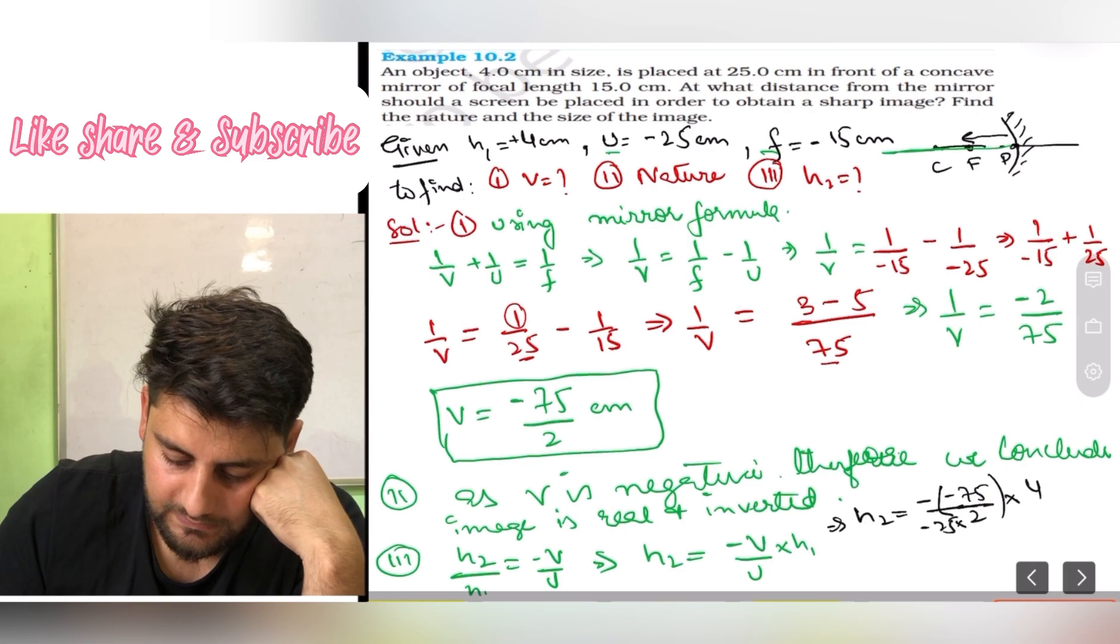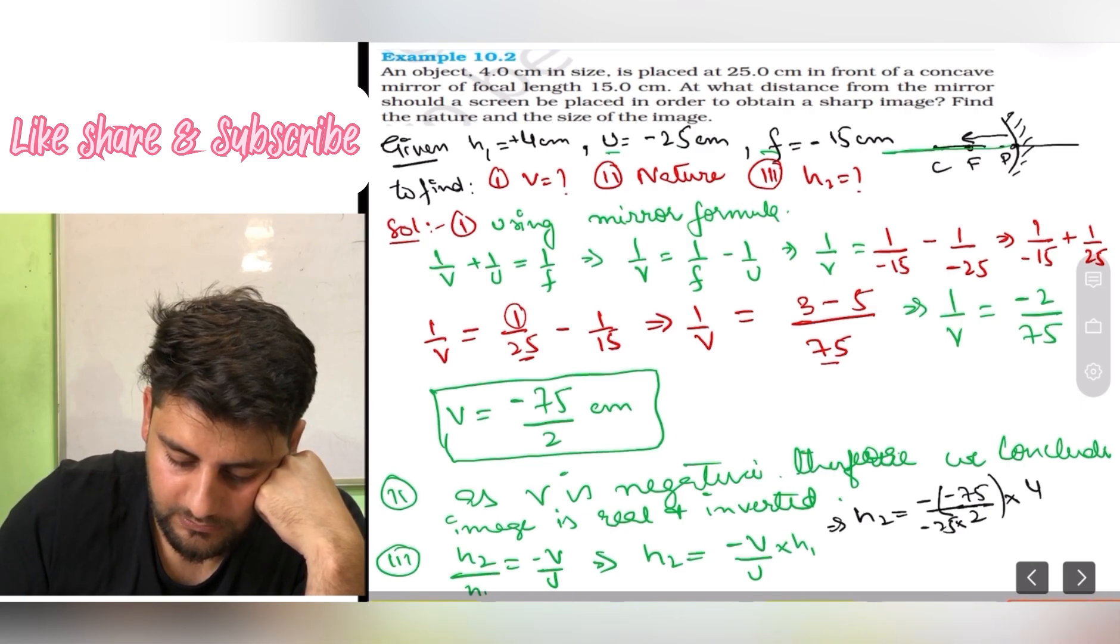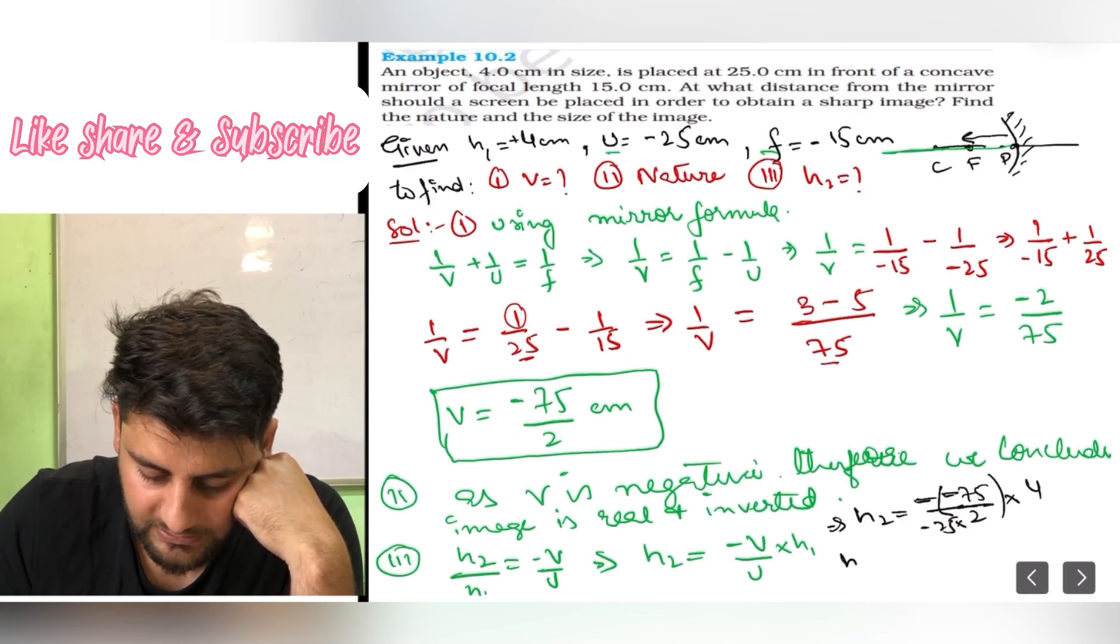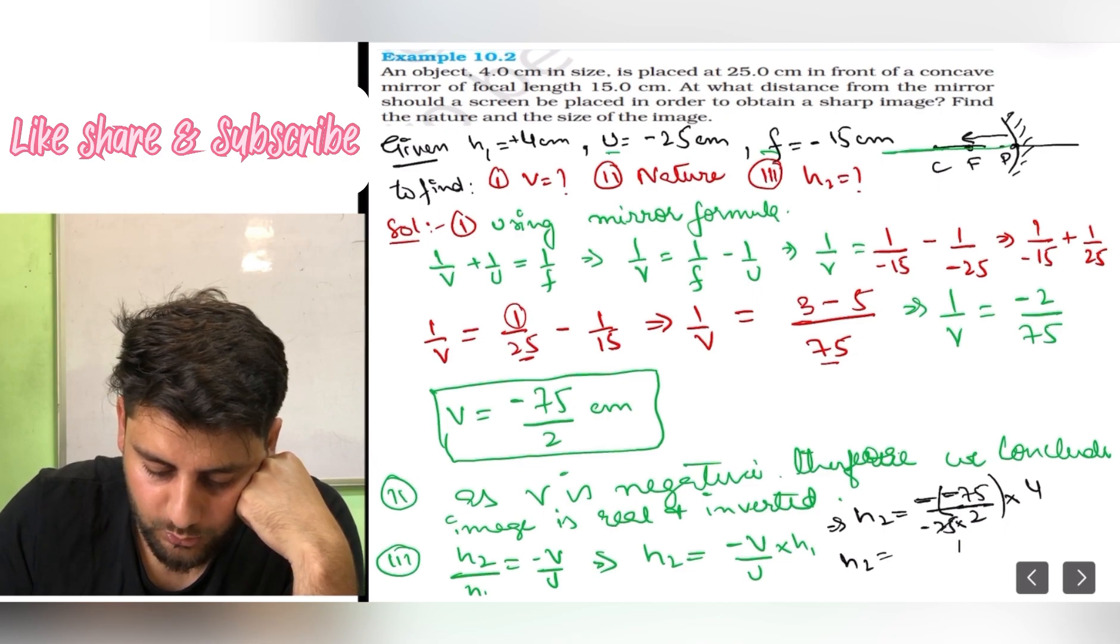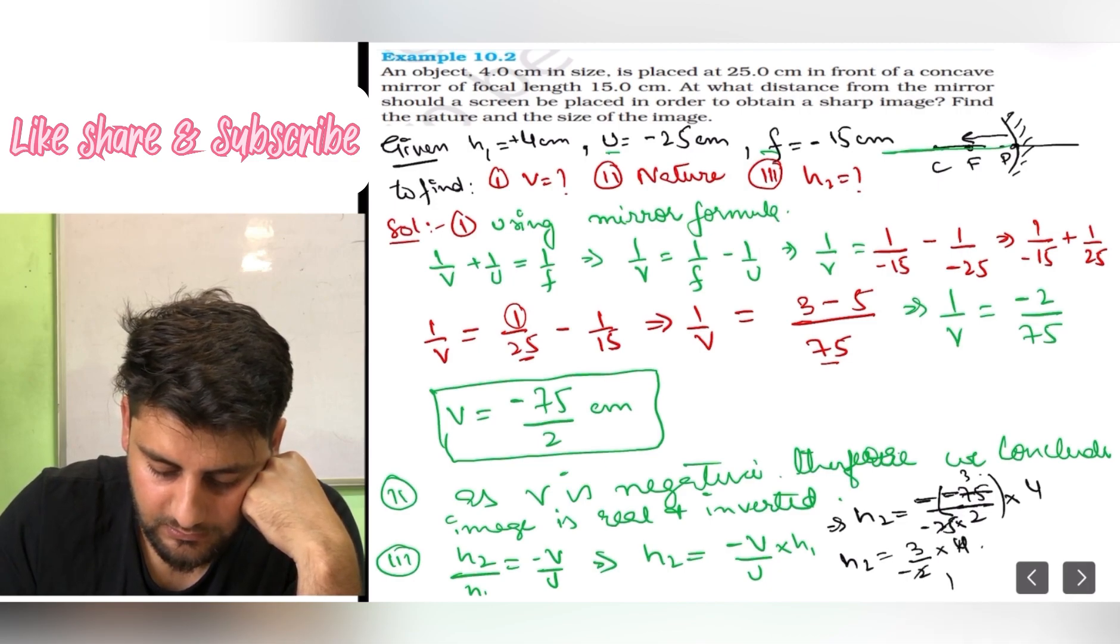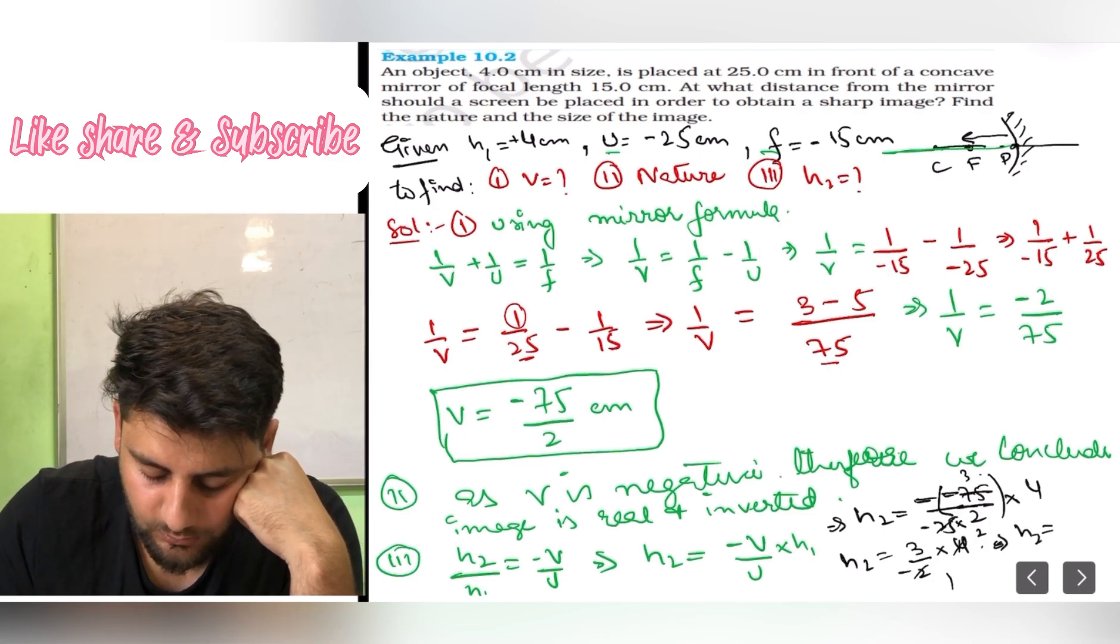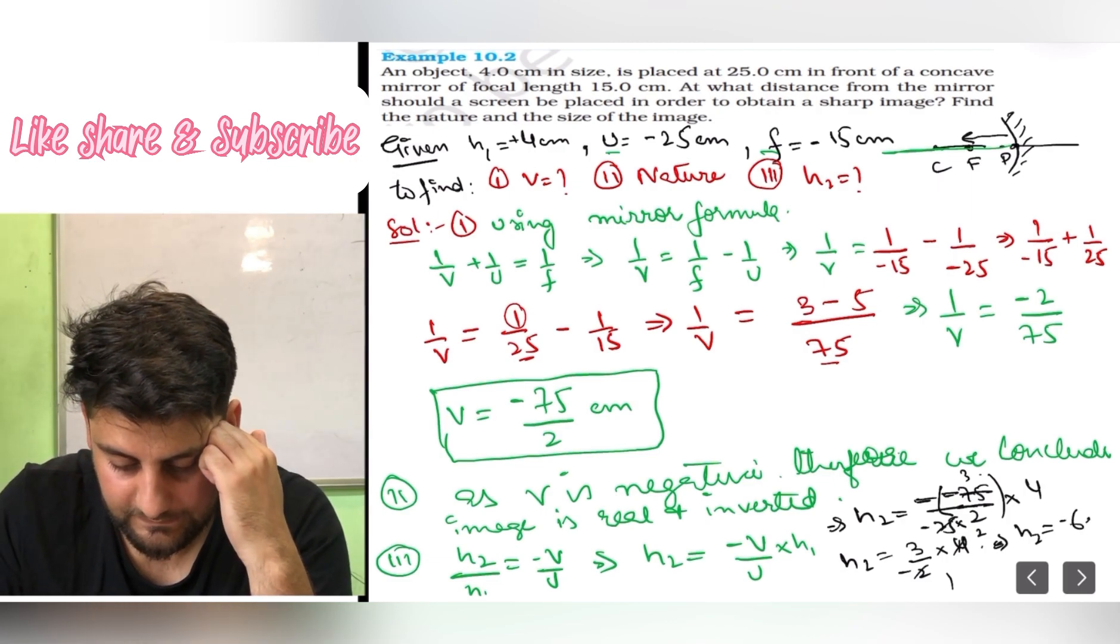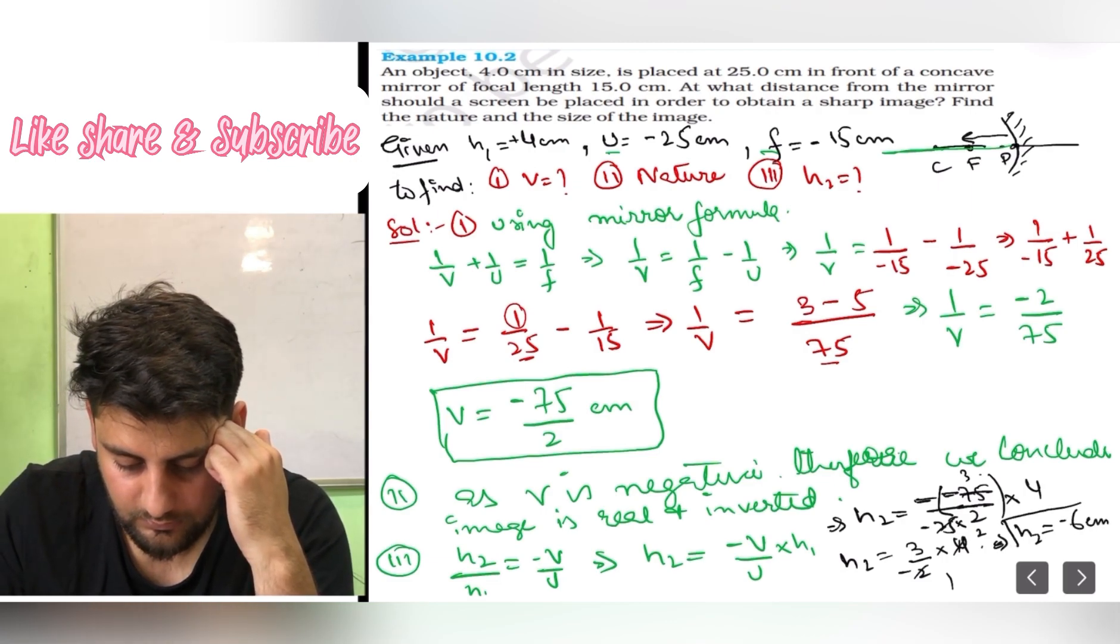From here you can see that this negative negative gets cancelled, it becomes positive, but still h2 comes negative because denominator has negative here. And 25 threes, so you are getting 3 by minus 2 into 4. 2 twos are. So what are you getting? h2 equals how much? 3 twos are 6, minus 6, minus 6 centimeters.